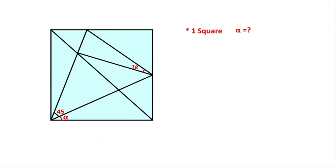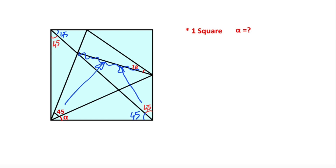In this video we have one square. This angle is given as 45 degrees, here is given 18 degrees, and alpha is x. We know that this length is the diagonal of the square, so these are 45 degrees — these two angles are 45 degrees because of the diagonal. Notice that opposite 45 degrees have the same length.